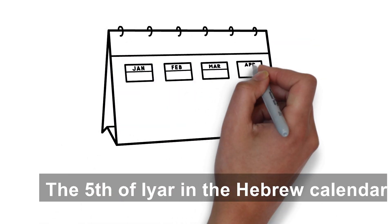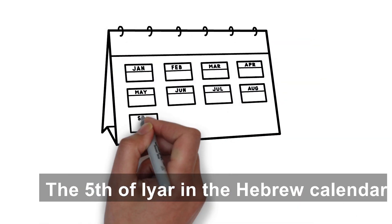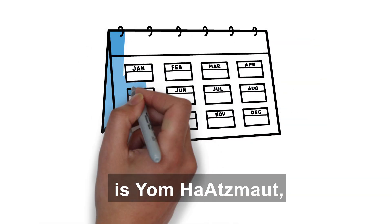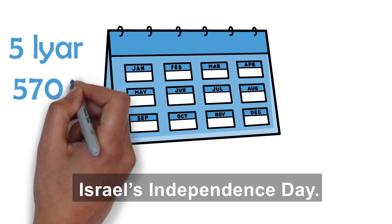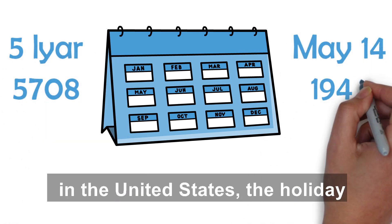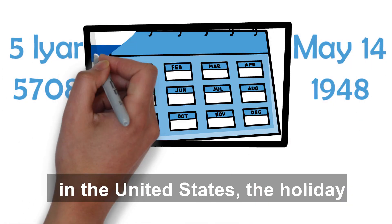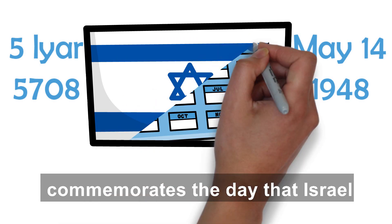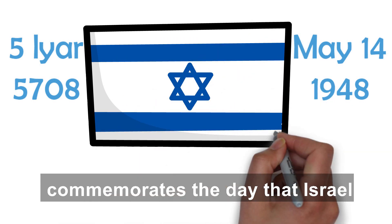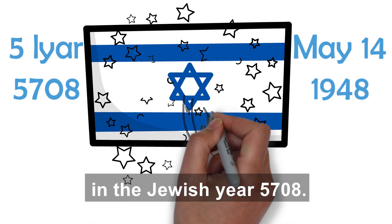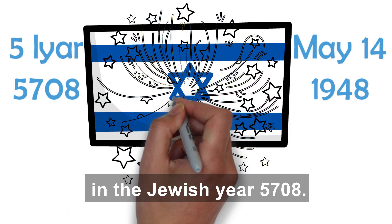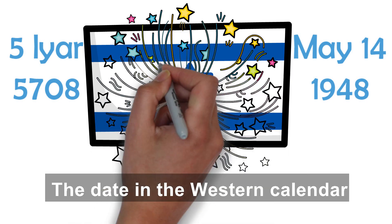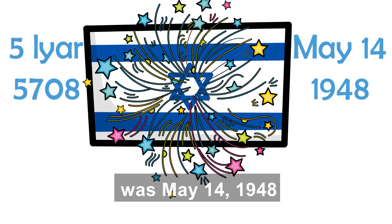The 5th of Ayar in the Hebrew calendar is Yom Ha'atzma'ut, Israel's Independence Day. Like the 4th of July in the United States, the holiday commemorates the day that Israel declared itself an independent nation in the Jewish year 5708. The date in the Western calendar was May 14th, 1948.